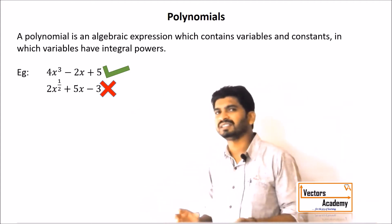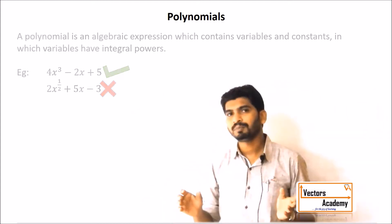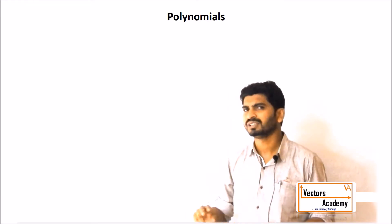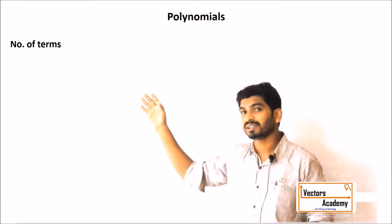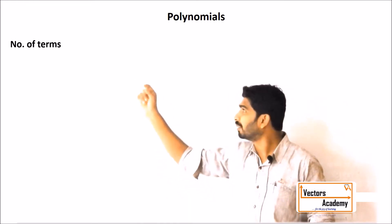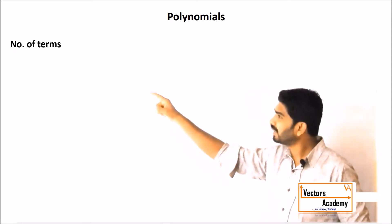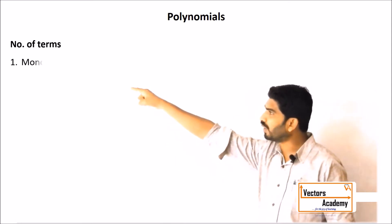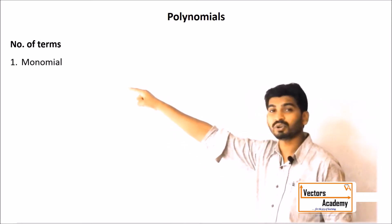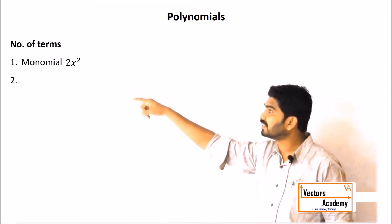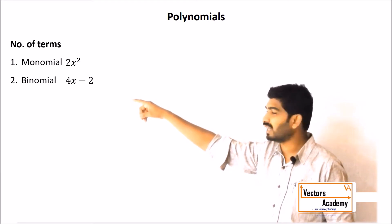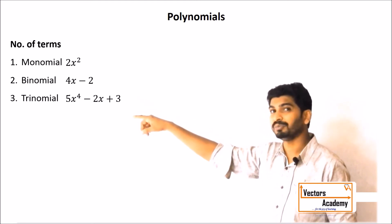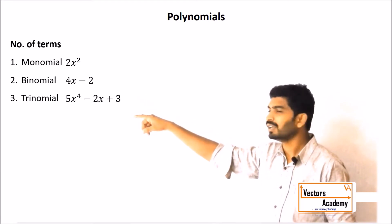Now let us see how polynomials are classified. Polynomials are basically classified in two different types. The first type is based on the number of terms. If the polynomial contains just one term, that is called a monomial. If it contains two terms, that is a binomial. And if it contains three terms, that is a trinomial.